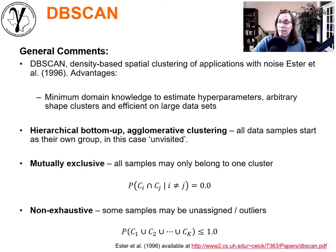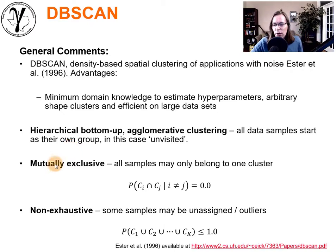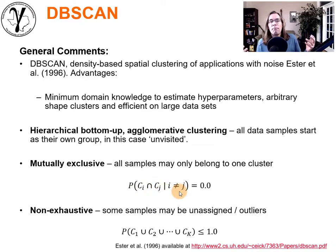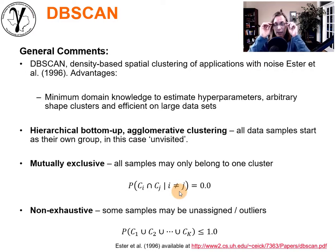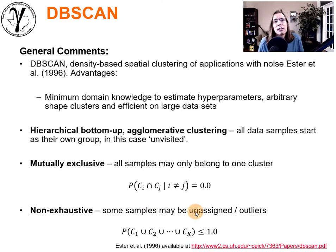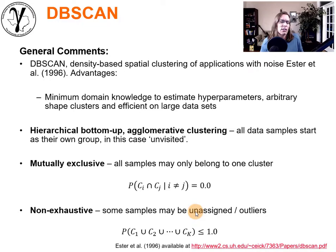It is a hierarchical, bottom-up, agglomerative clustering methodology. All data samples start as their own — all unvisited, alone — and you then group things up. We're going to assume mutually exclusive groups: for clusters i and j, if i is not equal to j, the probability of them intersecting is zero. Every data value can only belong to one group. But whereas k-means clustering was exhaustive, the DBSCAN methodology is non-exhaustive. Some samples may be left unassigned and deemed to be outliers, which is great — not only do you get automatic categories, but you can also determine if some data samples are just outliers.